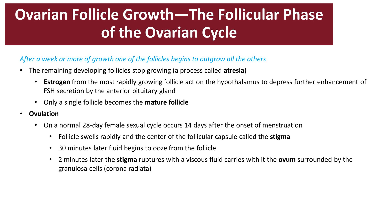On a normal 28-day cycle, about halfway through — 14 days after the onset of menstruation — the follicle begins to swell rapidly and the central region is referred to as the stigma. Thirty minutes later it starts pushing and oozing out from the follicle, and then within two minutes that stigma ruptures, causing the ovum to exit out of that cell layer.